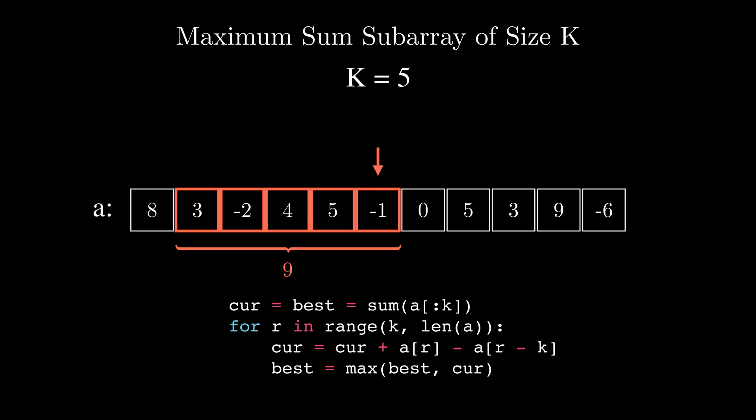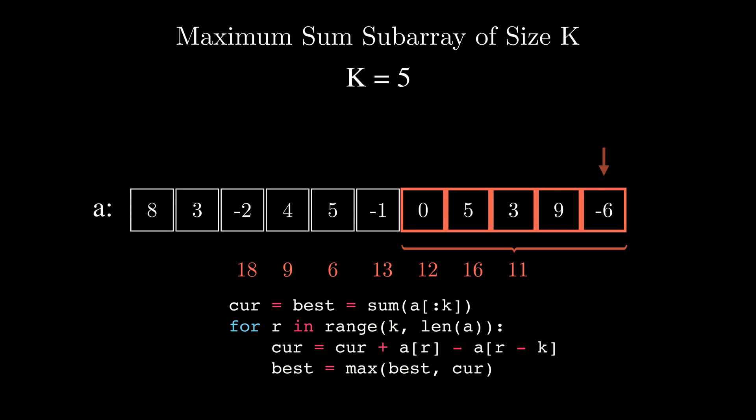So when simulating the algorithm on our example array the current sum would initially be 18 then on the first iteration of the for loop it would become 9 then 6 then 13, 12, 16 and finally 11. As we update the best on each iteration we should find that the largest subarray has a sum of 18.